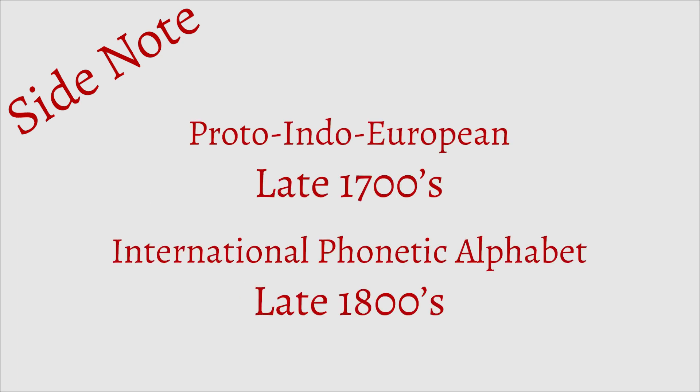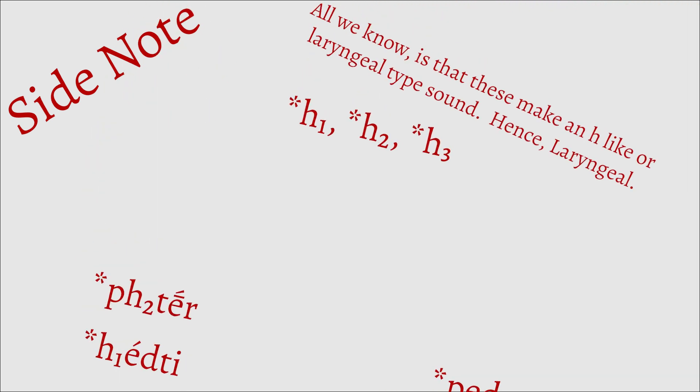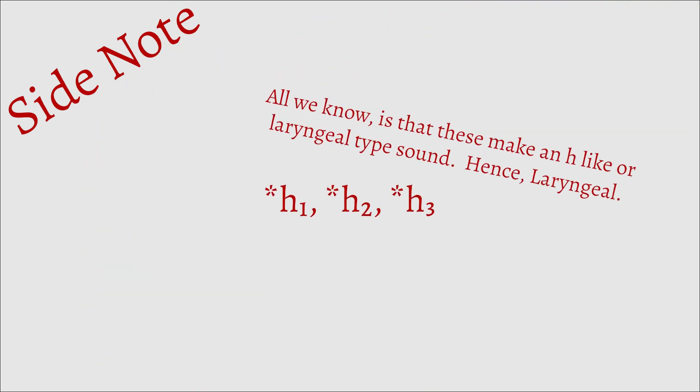Side note, notice how I'm not using IPA, and instead of slashes, I put an asterisk in front of each sound. The reason IPA isn't used is partly because the theory of PIE is older than the IPA itself, so it uses its own traditional notation instead, but also because we don't know the actual pronunciation of these sounds, and these are just our best guesses. The asterisk here is just to mark a reconstructed element of a proto-language, so it appears in front of sounds, words, and other elements like morphemes.